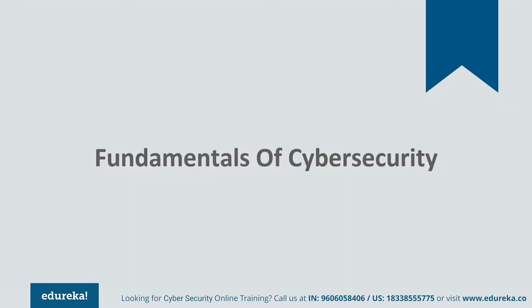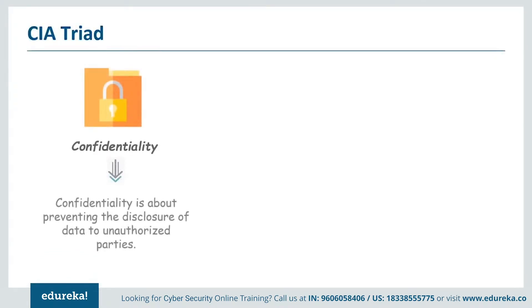Cyber security is a set of techniques and practices employed to protect data. But what are we actually protecting data from? We are protecting data from unauthorized access, unauthorized modification, and unauthorized deletion. These three terms are similar to what we know as the CIA triad in cyber security. CIA stands for confidentiality, integrity, and availability. Let's explore the CIA triad. Confidentiality is exactly what it sounds like — keeping your information secret. It is the protection of information from unauthorized people and processes.